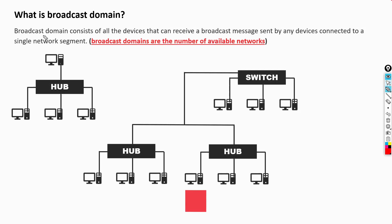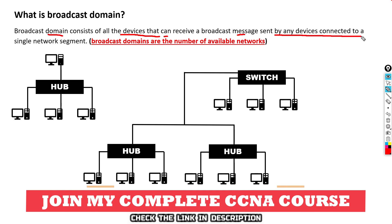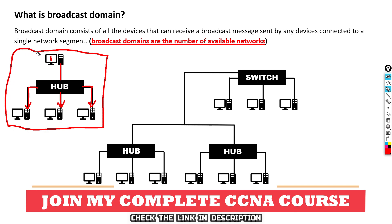What is broadcast domain? A broadcast domain consists of all the devices that can receive a broadcast message sent by any device connected to a single network segment. To identify the broadcast domain, you simply identify how many networks are available in the diagram — each network counts as one broadcast domain. For example, in a single network where PC number one is sending a message, the hub broadcasts this message to all connected devices, so all devices fall under one broadcast domain.